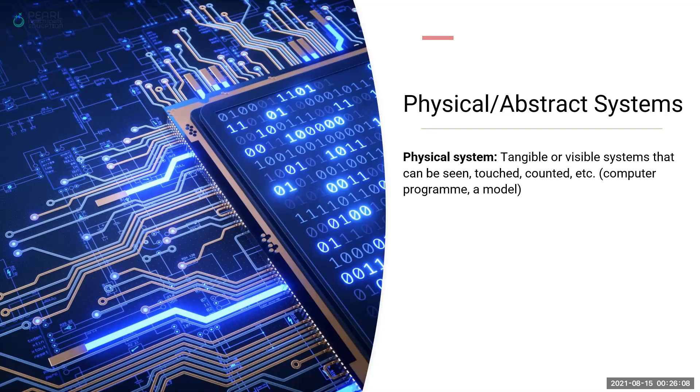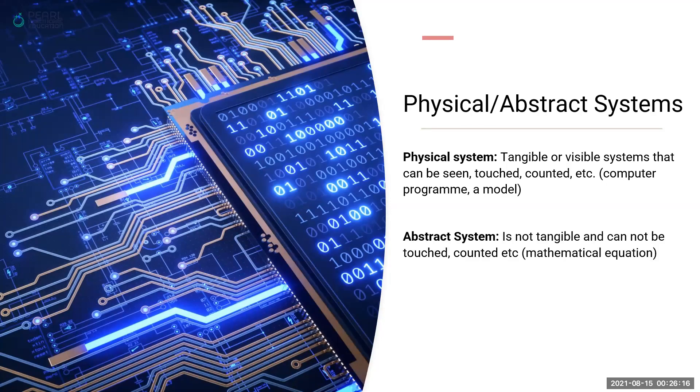Systems could be physical or abstract. A physical system is something which is tangible, which you can touch, which you can see, for example a computer program. An abstract system on the other hand is something which you cannot see, it's not touchable, it's not tangible, for example a mathematical equation where it gives you a result and you know that something is happening but you cannot actually touch it physically or do anything with it.